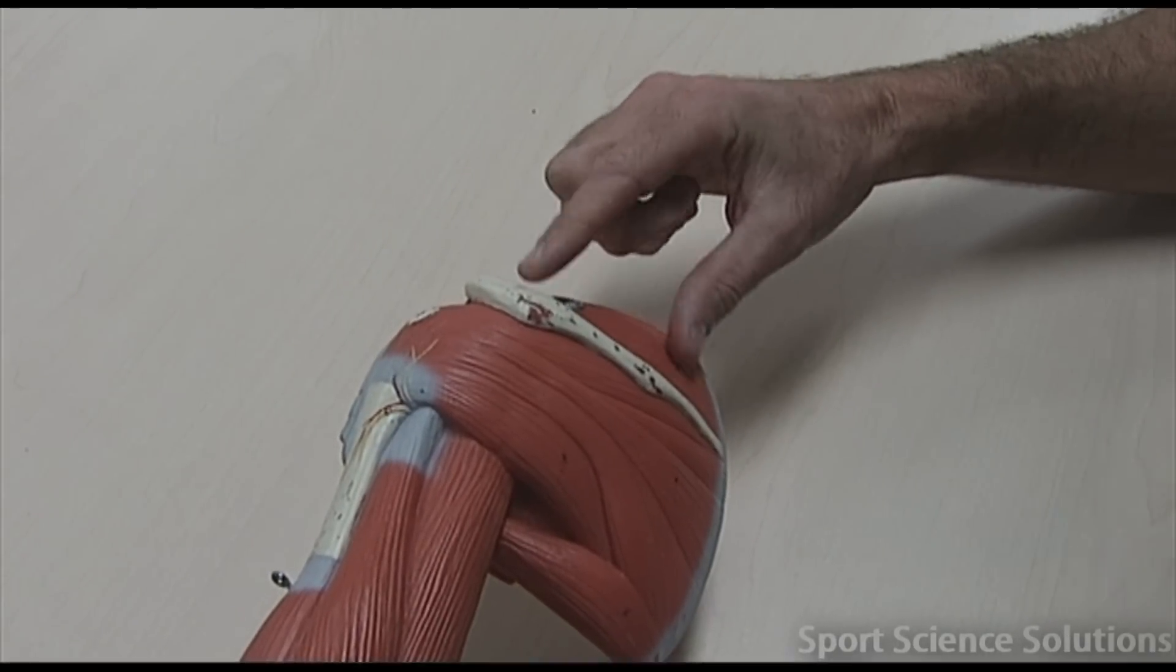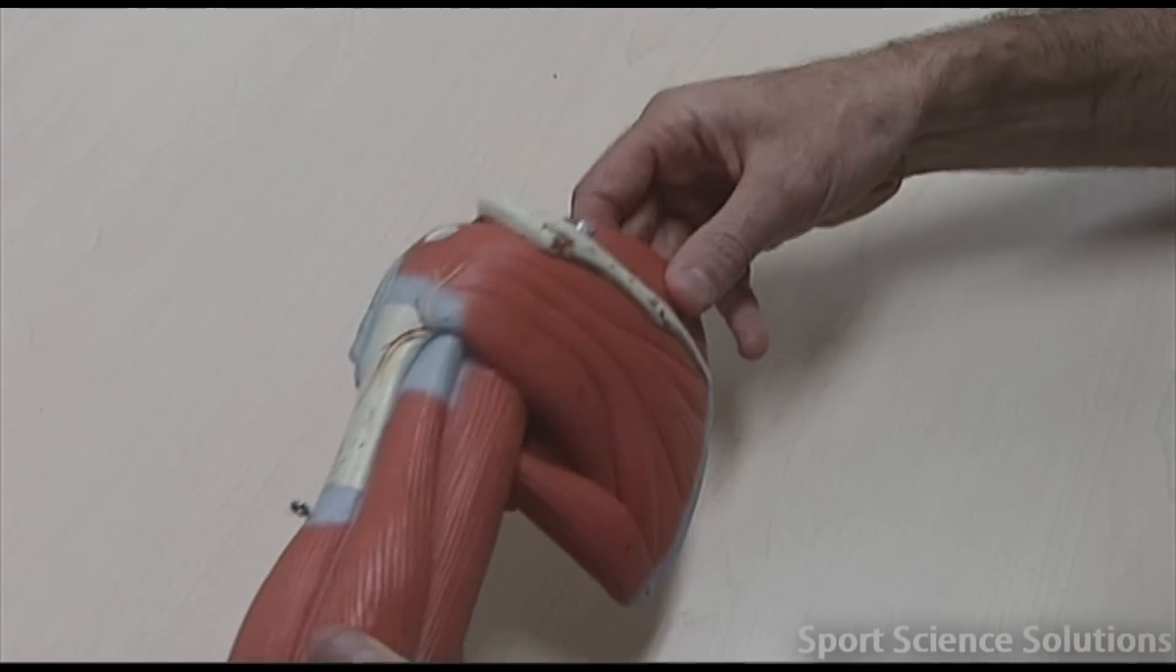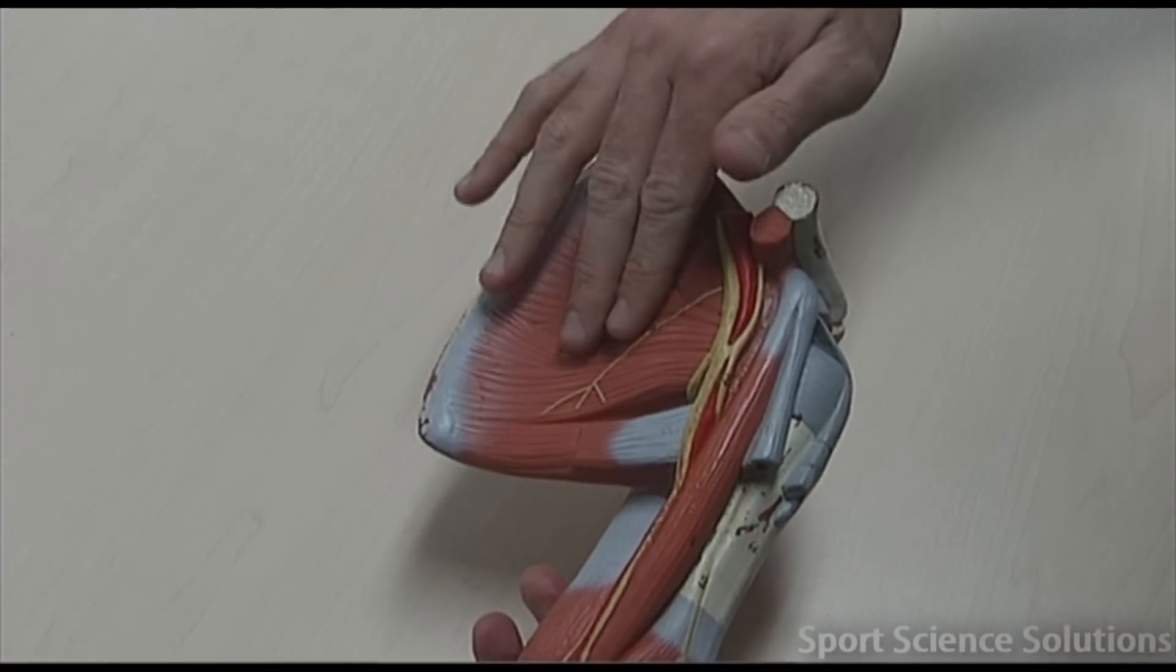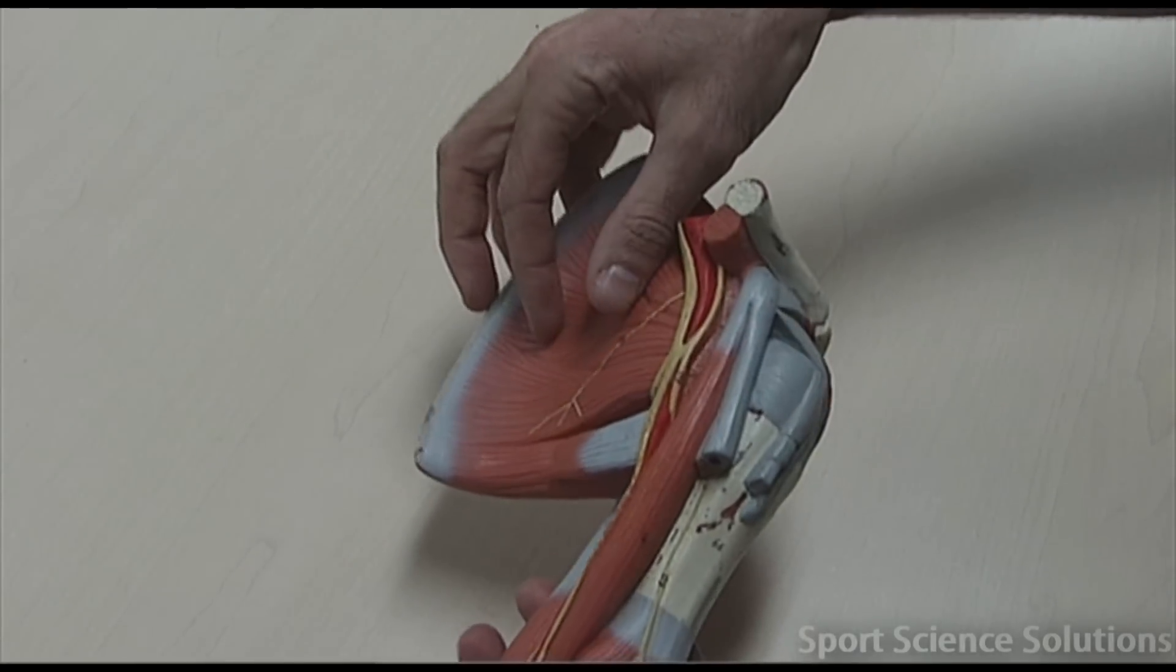If the supraspinatus was to shorten, the arm would abduct. And the subscapularis, which connects to the front of the humerus, if that was to shorten, we would see the arm medially rotate.